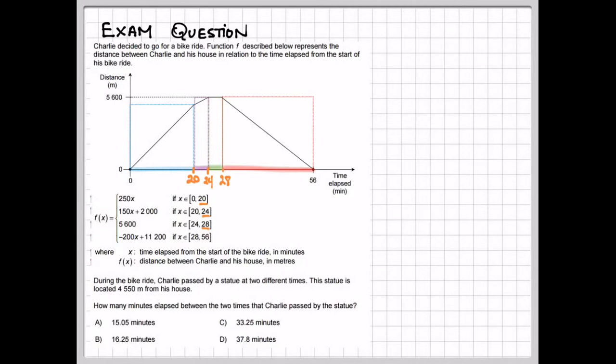The blue function is between 0 and 20, so it stops at 20. The purple is between 20 and 24, so it stops at 24. The green is between 24 and 28, so I stop at 28. And the red is between 28 and 56.